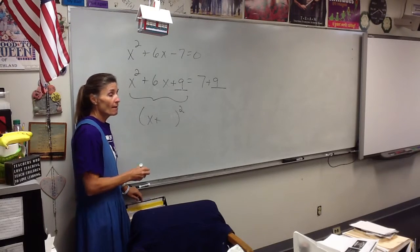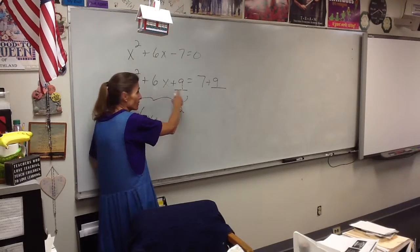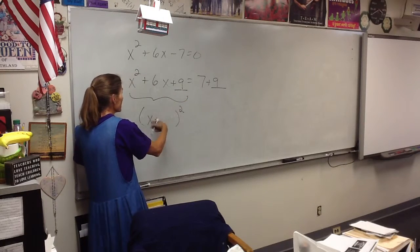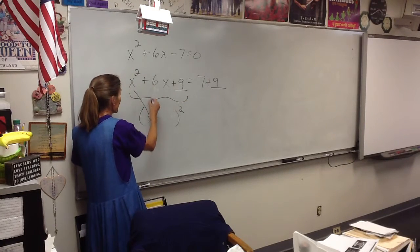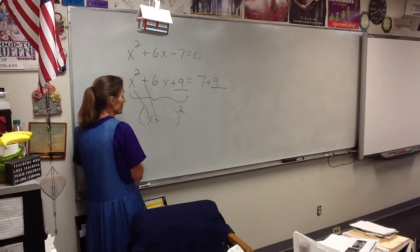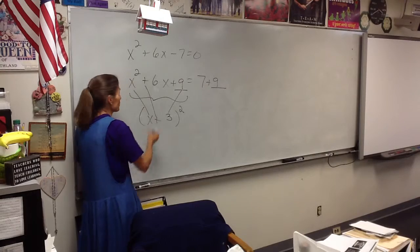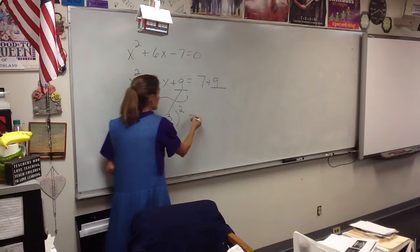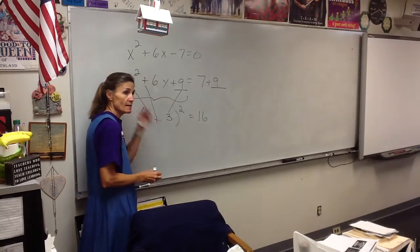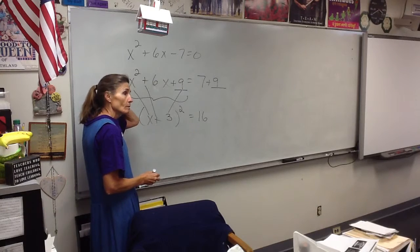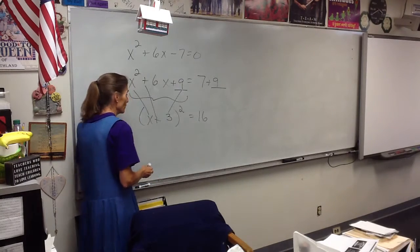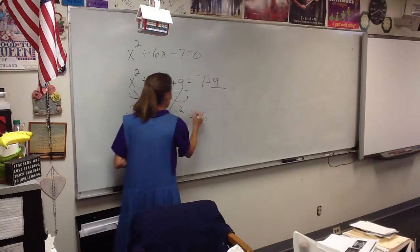So half of 6 squared. Now, what does that make this square then? I know it is x, I know it is plus. What goes here? 3. So this is x plus 3 squared equal to 16. Then what do we do? Square root both sides.